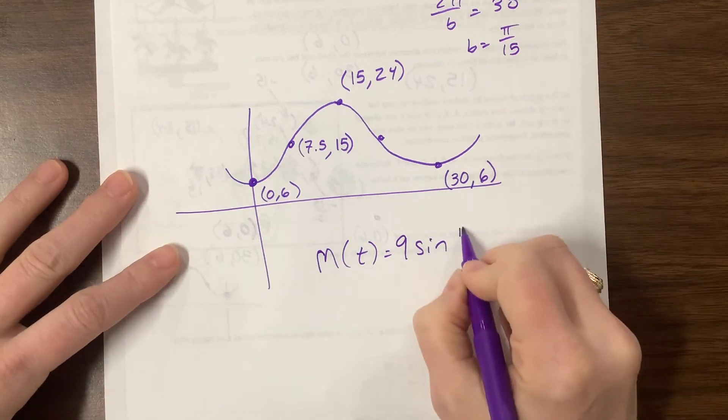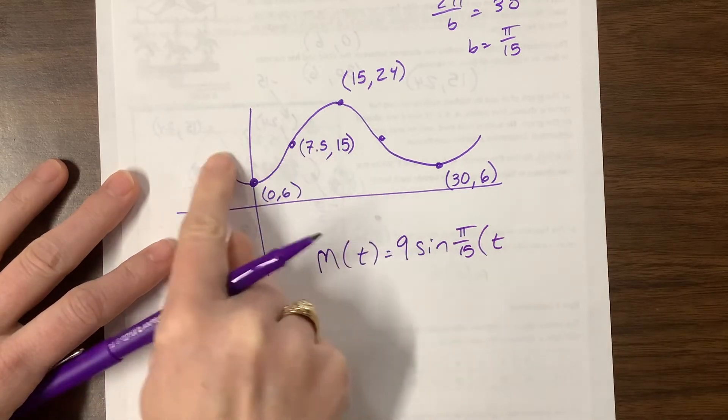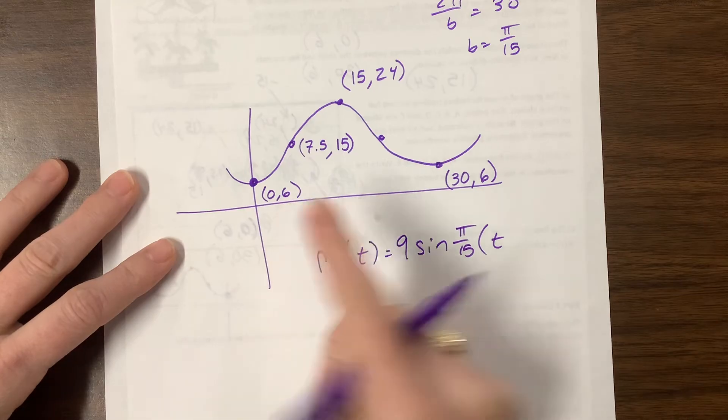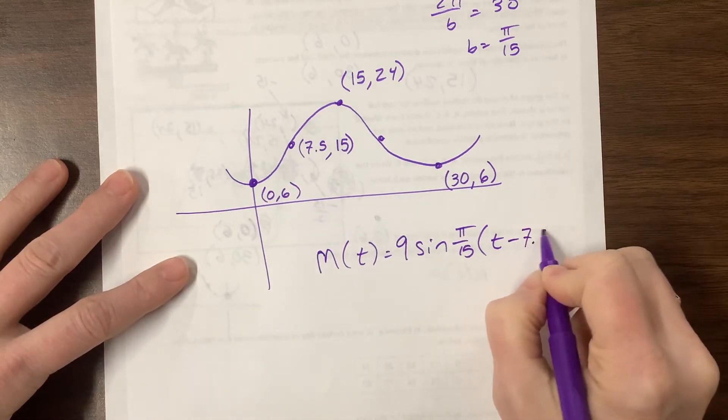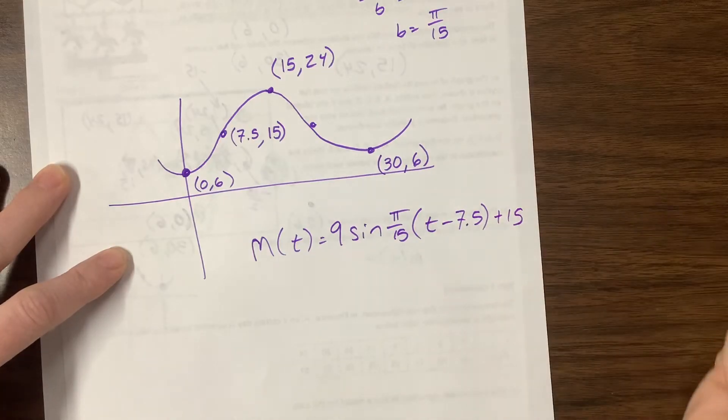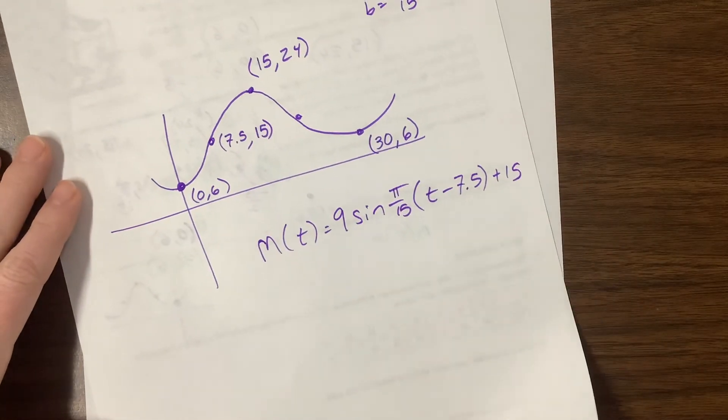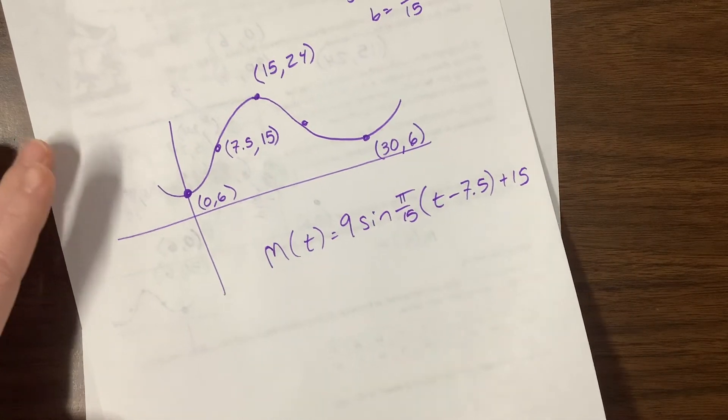So pi over 15, but I do need to shift this. I need to shift it from the origin. I need to shift it right. So minus 7.5. And then I need to shift it up 15. That's my midline. That was harder than it needed to be. But there we go. That is an equation. If you'd found something else, plug both of them into decimals and see if you got the right thing.